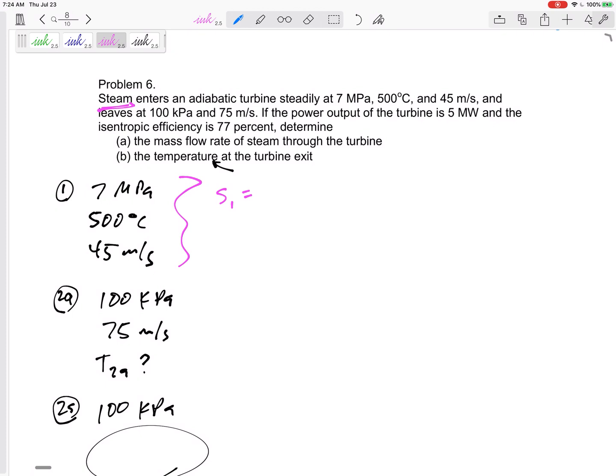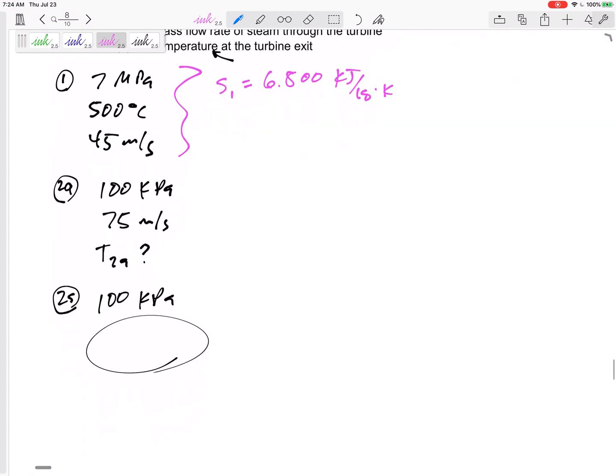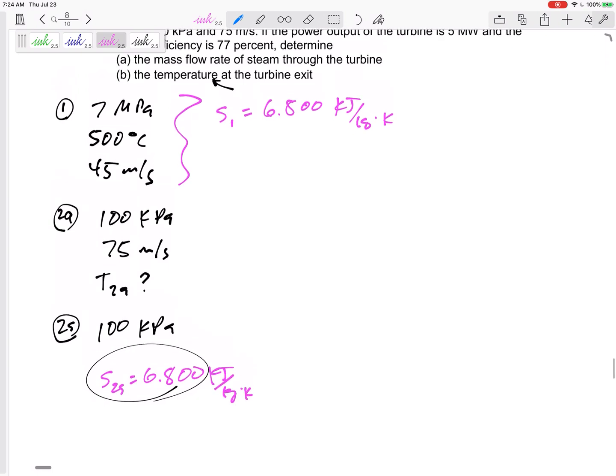s1 from right here, from the property tables. You know this pressure, this temperature—is it superheated? Go to the tables, find s1 = 6.800 kilojoules per kilogram K. And so that is the isentropic entropy; it would be here at 6.800 kilojoules per kilogram K.